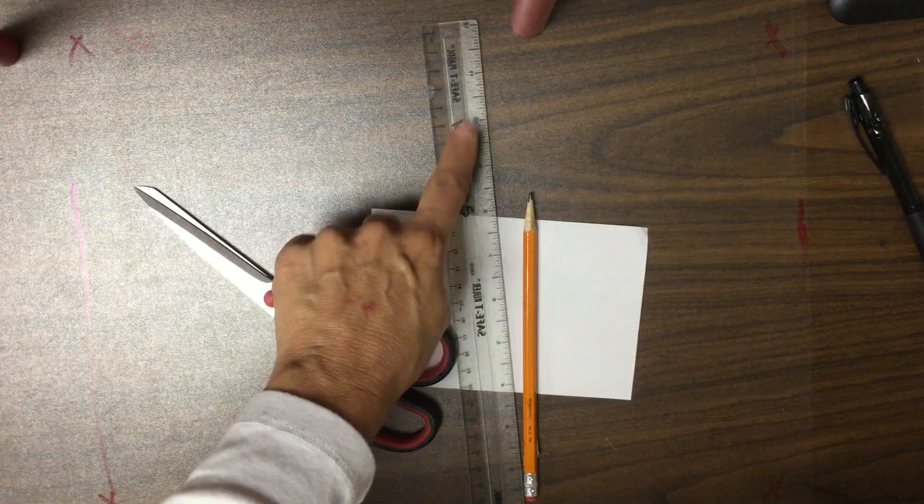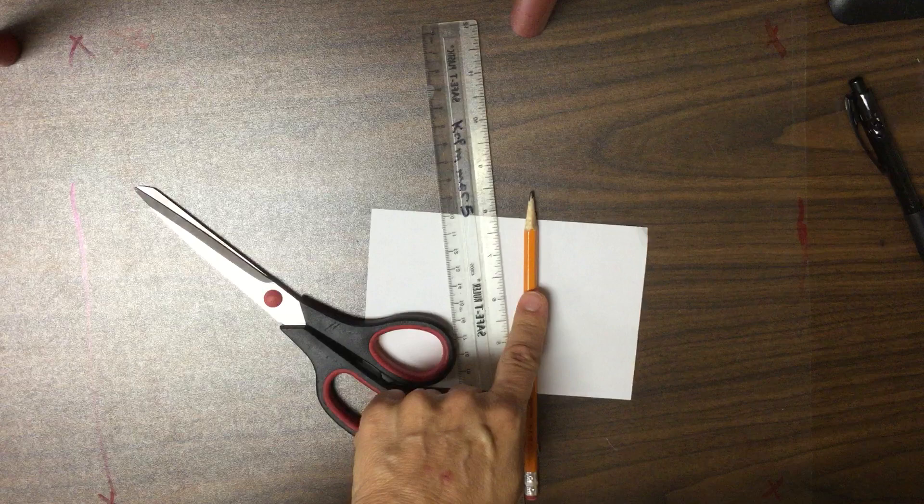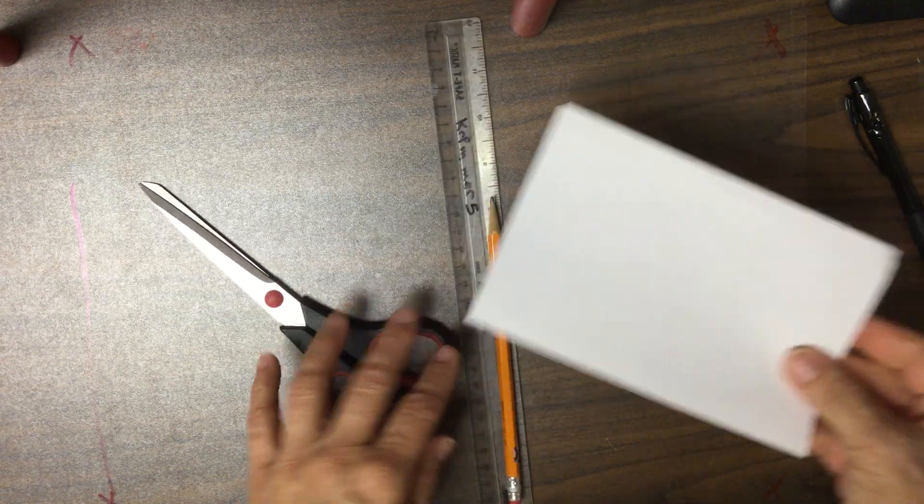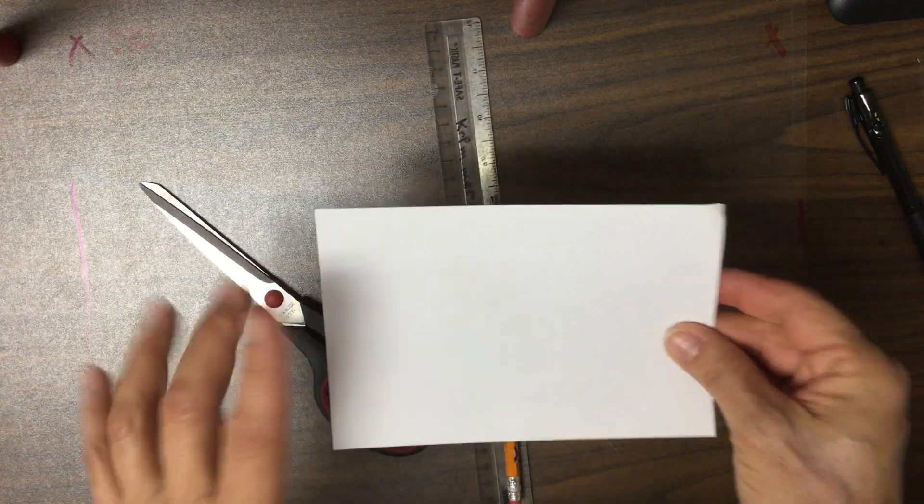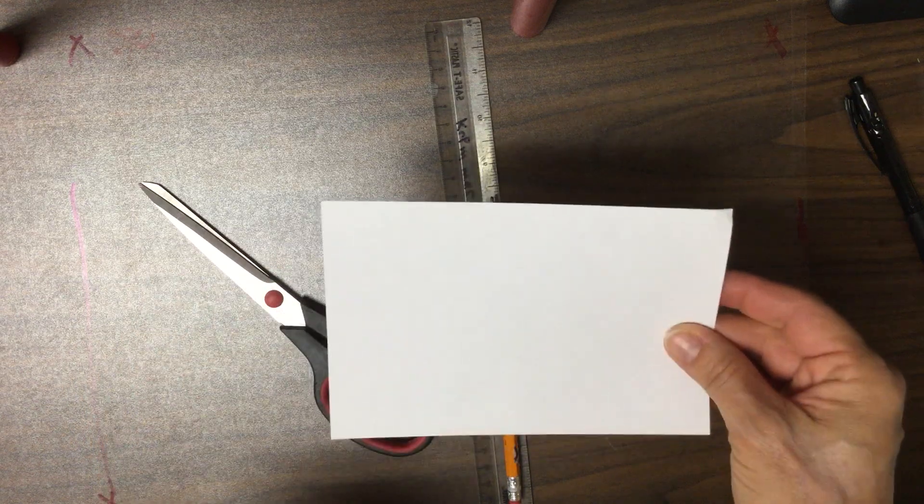You're going to need scissors, a ruler, a pencil, and a post-it note or an index card with a square corner. Something small with a right angle will be helpful.